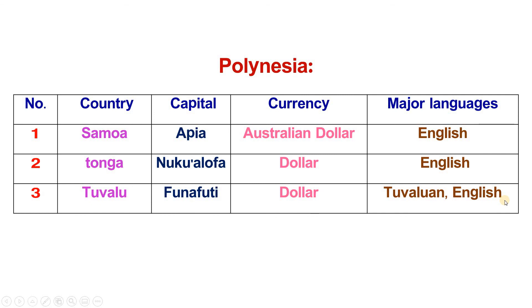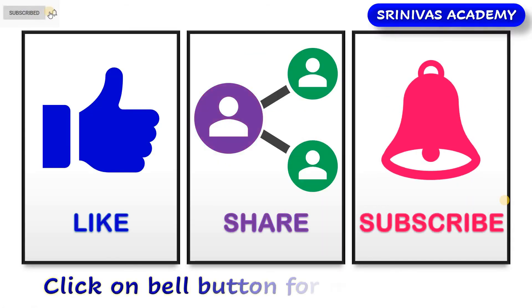With this, we have completed the four types of Australia. In our next video, let's discuss species, deserts, and grasslands. Thank you friends. Please like, share, and subscribe for more updates.